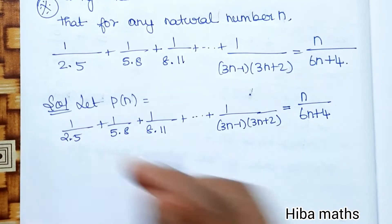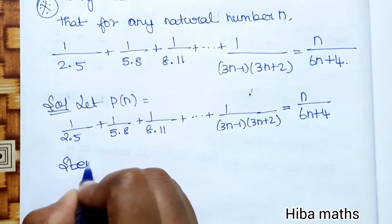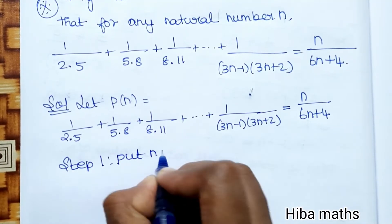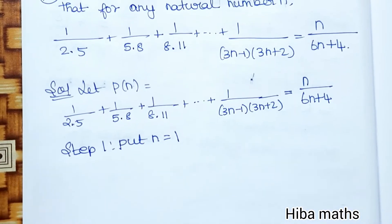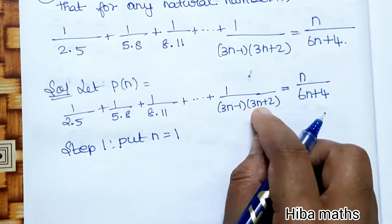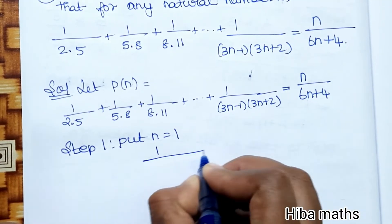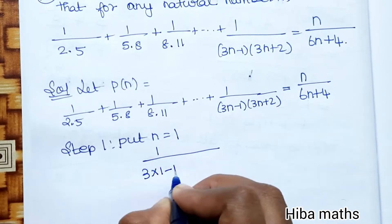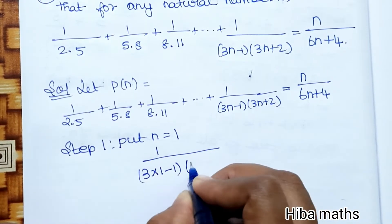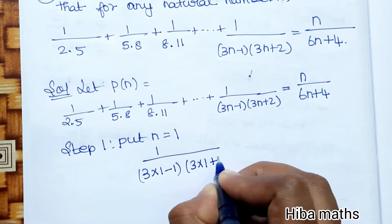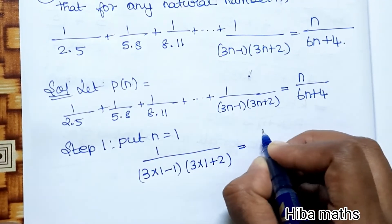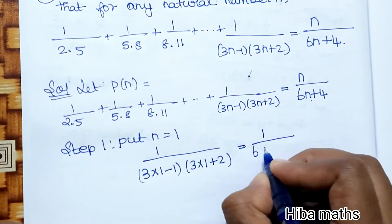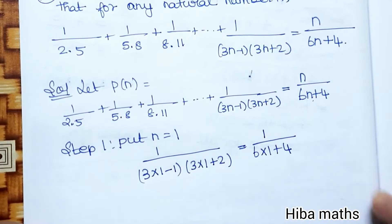Now the first step is: Step 1, substitute N = 1. The left-hand side becomes 1/((3×1−1)(3×1+2)), and the right-hand side becomes N/(6×1+4) where N = 1.